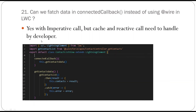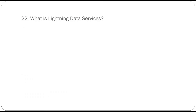Can we fetch data in connectedCallback instead of using wire? Yes, with an imperative call we can call an Apex method inside connectedCallback. As shown in the example, the Apex method is called imperatively inside connectedCallback on component load. However, compared to wire, the imperative approach does not cache the response and does not support reactive parameters, so prefer wire when you want caching and reactivity.